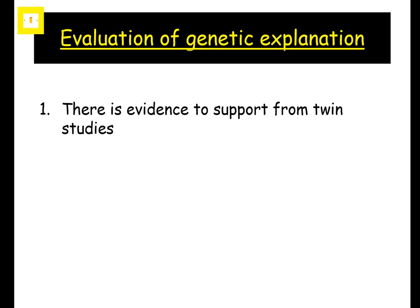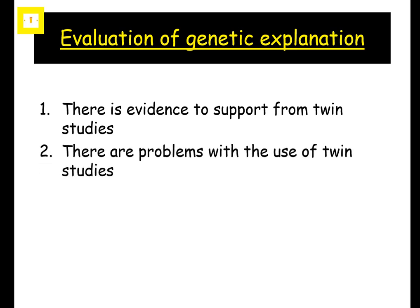The first thing I'd want you to say is that a good strength is there is evidence to support from twin studies. Make sure you can pinpoint a twin study and know why it supports the explanation. But there are lots of problems with the use of twin studies — think about how many twins there are, how many have OCD, how difficult it would be to find them, and how many different ways there are of calculating concordance. There are lots of problems with twin studies and you end up with small samples.